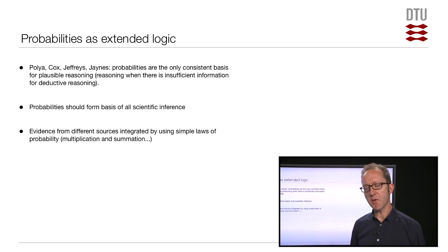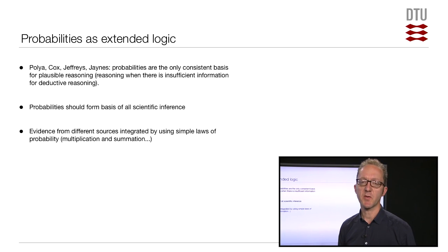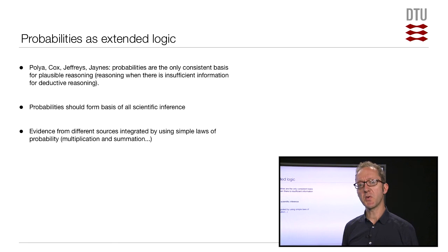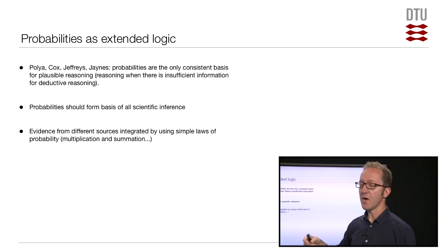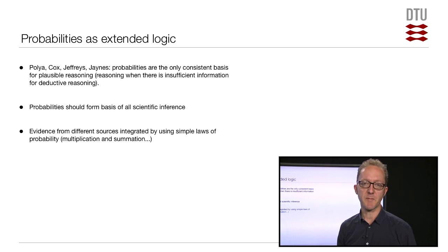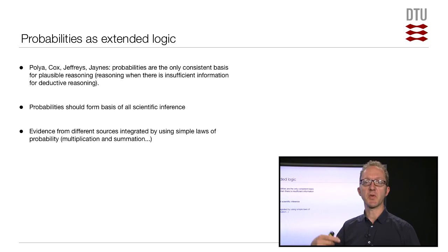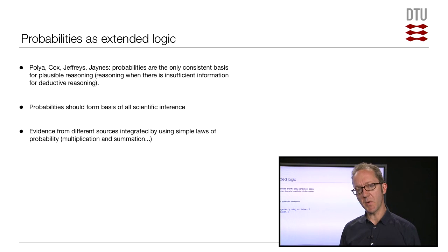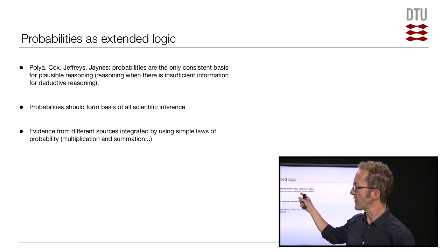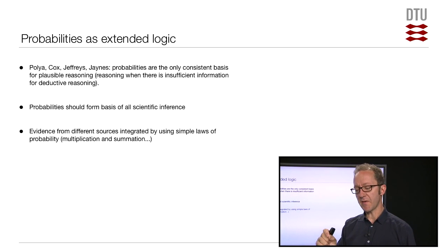There is a whole body of mathematical work arguing that probabilities used as ways of quantifying uncertainty — as degrees of belief — is the only consistent way of doing plausible reasoning: reasoning about aspects of reality when we don't have enough information for deductive reasoning. That is most of what science is about. We can very rarely use deduction to conclude how a system works; we collect data and try to infer how the underlying system works.